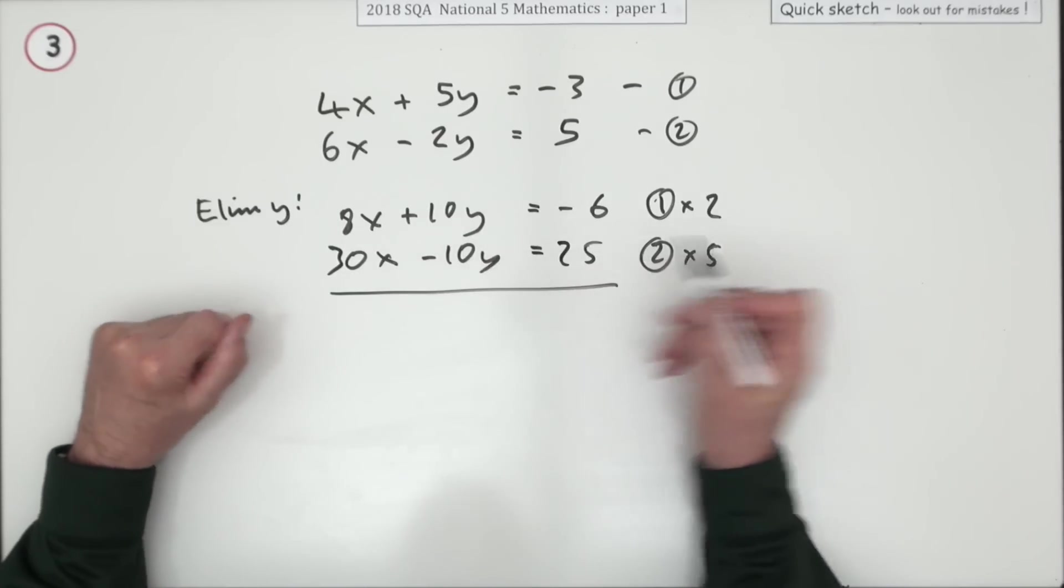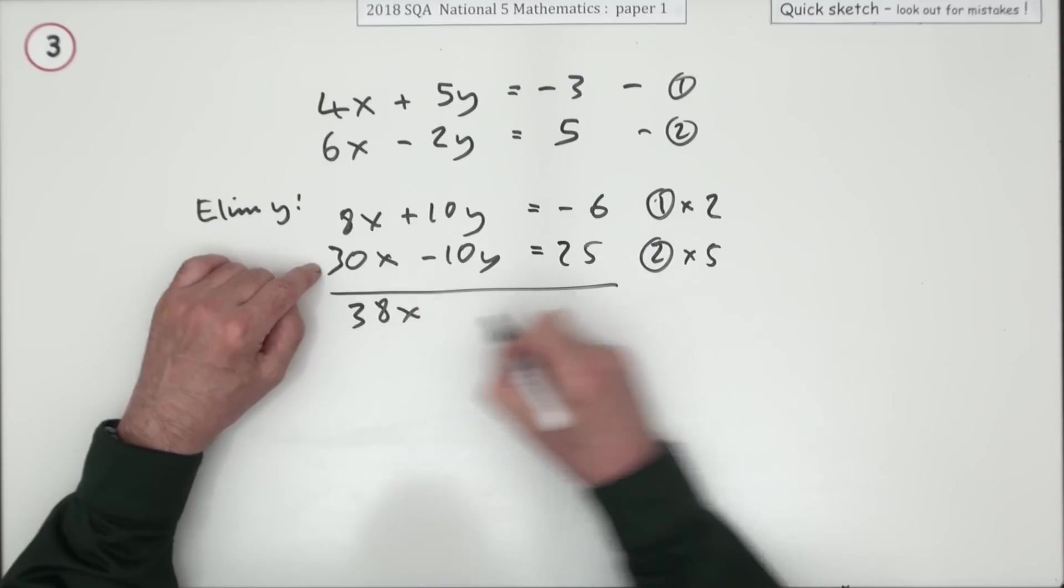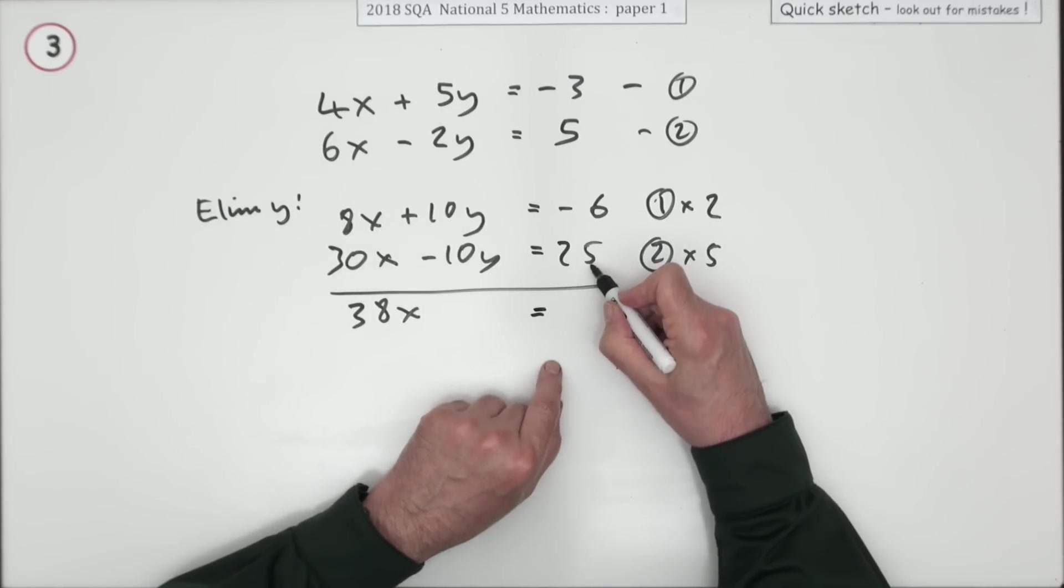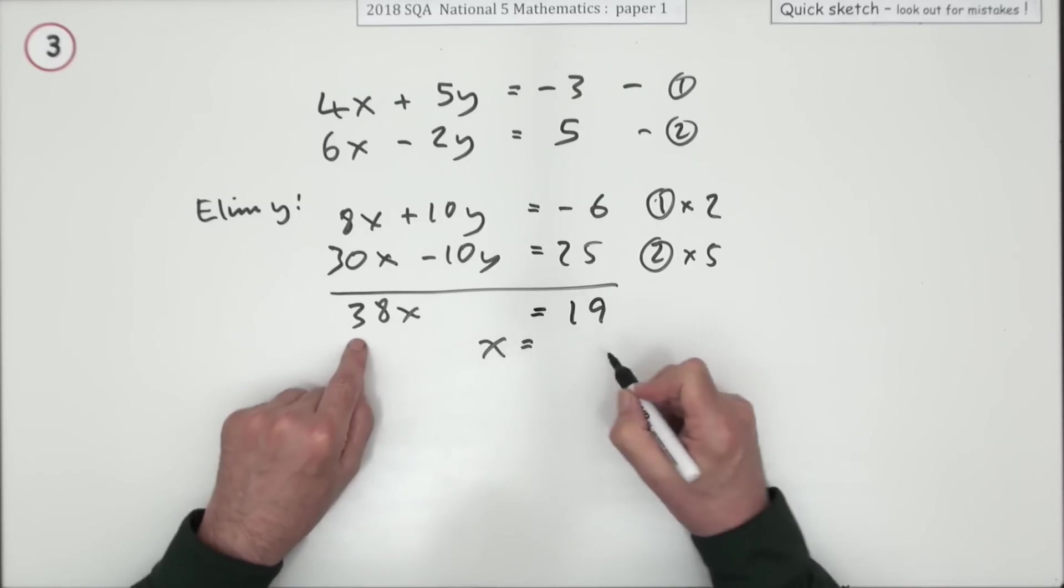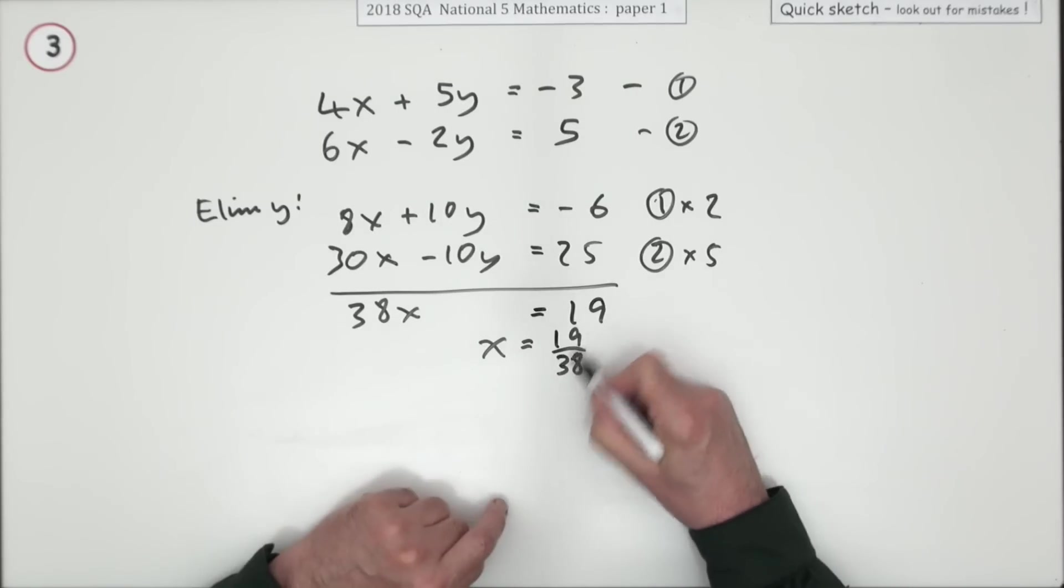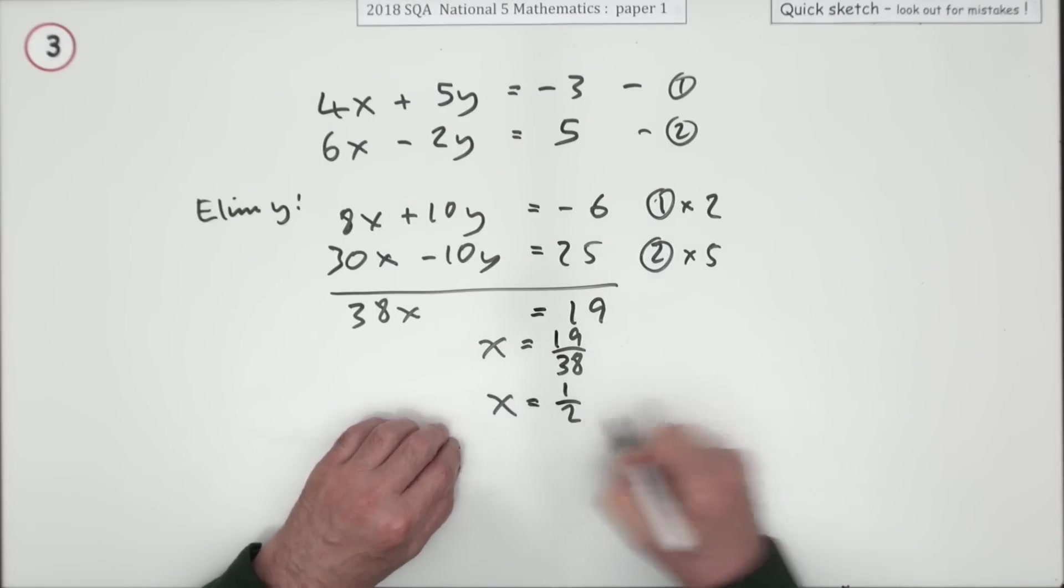And of course that's what you wanted. The y's disappear just leaving you when you add them with 38x equals, now 25 take away 6 is 19. Horrible looking numbers. But when you take that 38 across, that actually cancels down because 19 goes into 38 twice. So the answer is x equals a half.